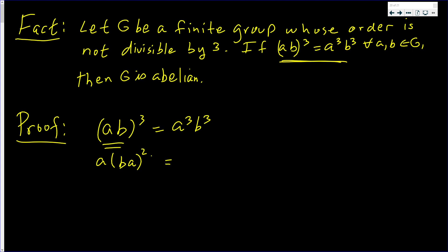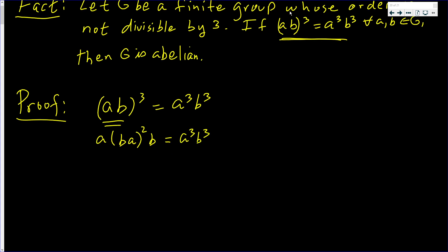which is a³b³. I'm going to kill off an a on the left and an ab on the right on both sides. And I will have that (ba)² = a²b².